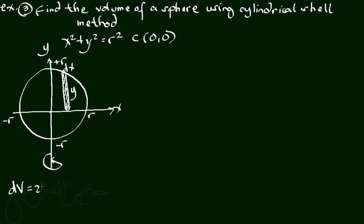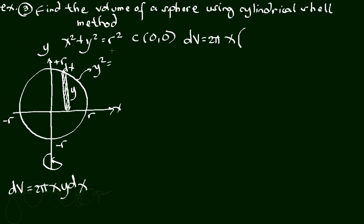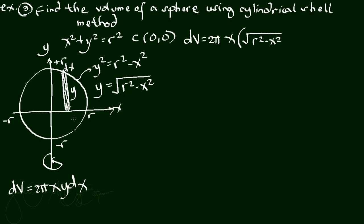Our formula is dv equals 2 pi x y dx. Substituting values: dv equals 2 pi x times (y upper minus y lower). Solving the circle equation for y gives y squared equals r squared minus x squared, so y equals the square root of r squared minus x squared. That is y upper, and y lower equals 0 since it touches the x-axis.